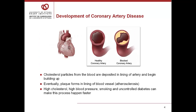Coronary artery disease develops when cholesterol and other substances build up within the walls of the artery and eventually turn into a heart plaque. This process can start at a very early age and is caused by a combination of genetic and lifestyle factors, which we call risk factors. Certain risk factors such as high cholesterol, high blood pressure, smoking, and uncontrolled diabetes can cause this process to happen very quickly within the coronary arteries.